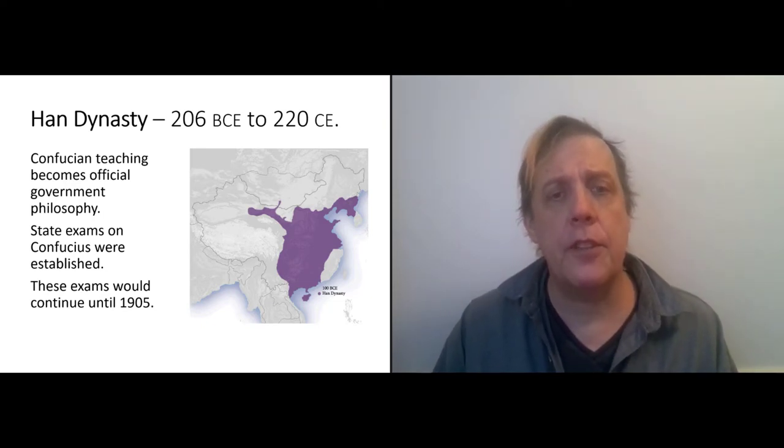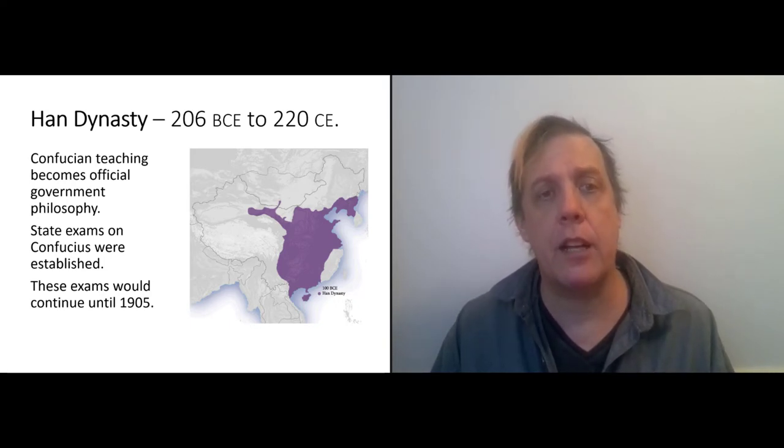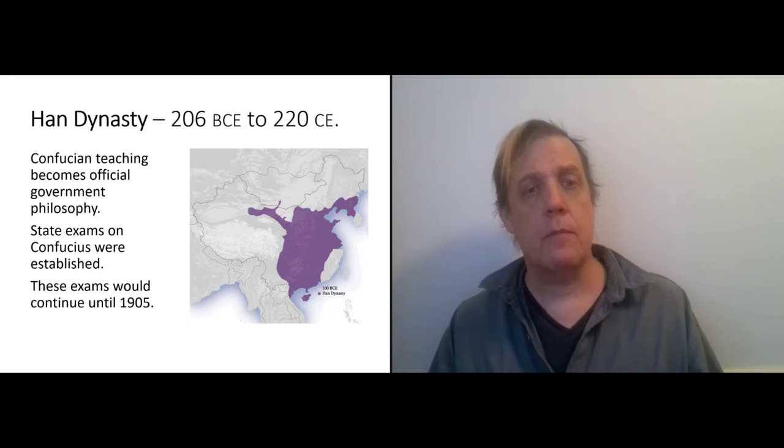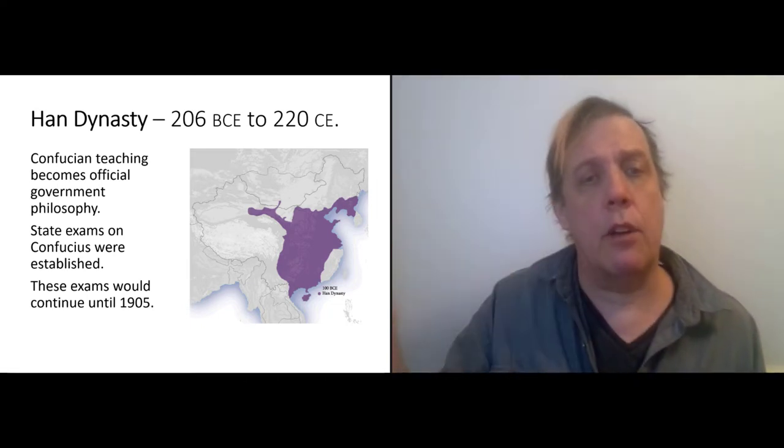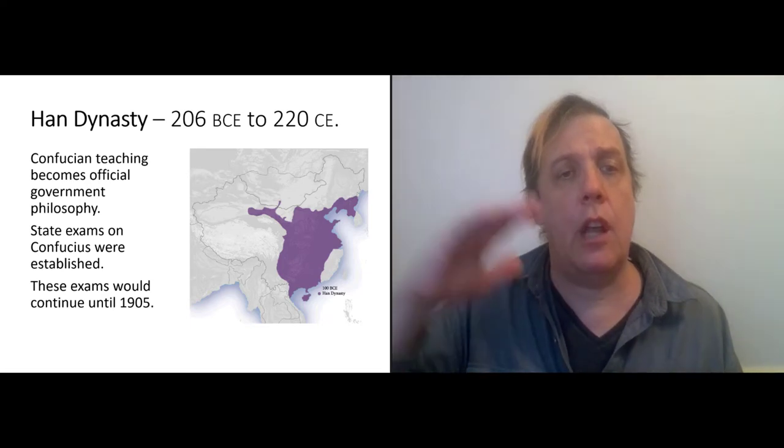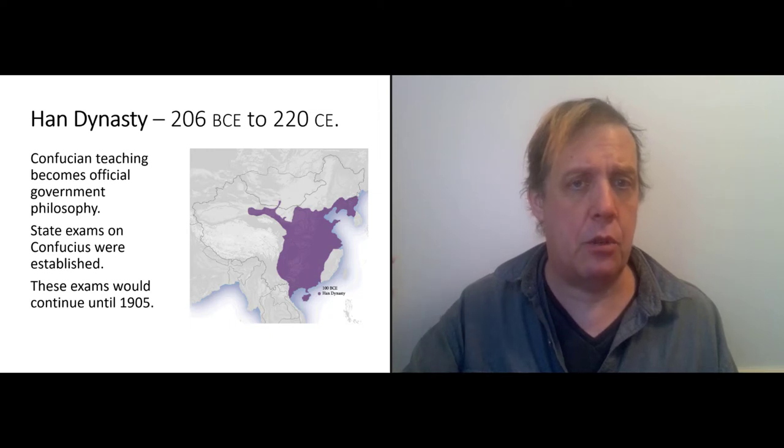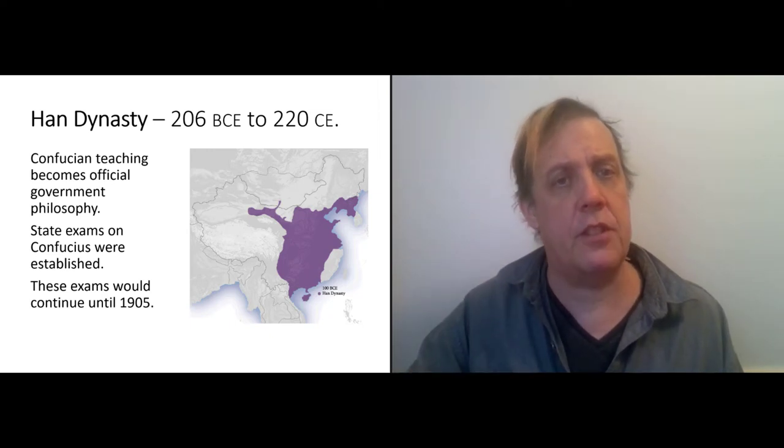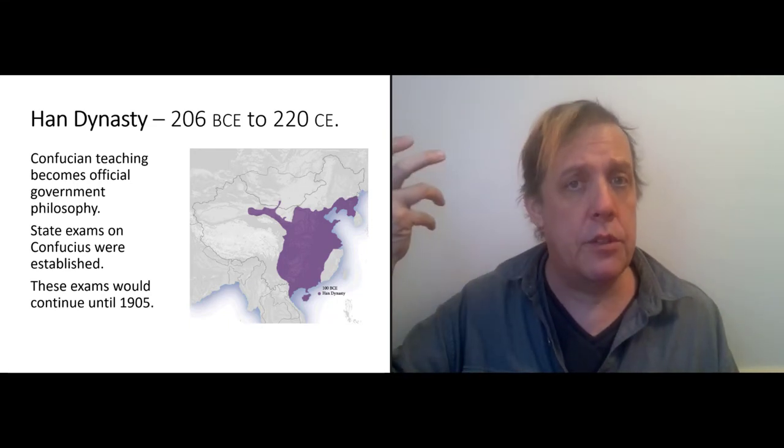And the way to get a job with the emperor was to be smart and pass tests on Confucius. So they start in the Han dynasty and they continue actually up till 1905 with the end of Imperial China. Contemporary ethnic Chinese often call themselves ethnically Han, and that is a reference back to this dynasty.